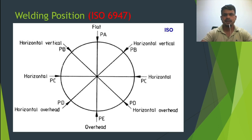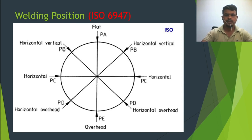But for piping, the pipe can be rotated or fixed, and for that reason we separate positions further. Position codes such as 5G, 6G, and others will be discussed one by one.